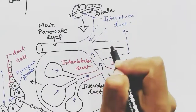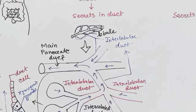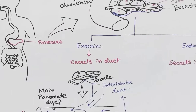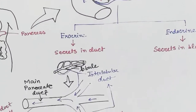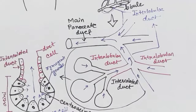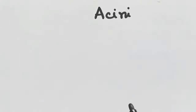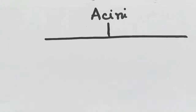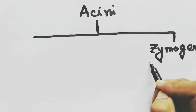The acini release their product, which travels through the duct system and meets the main pancreatic duct, and is then released into the small intestine and duodenum. The exocrine gland of the pancreas produces two types of products: zymogens, which are inactive enzymes, and some active enzymes.